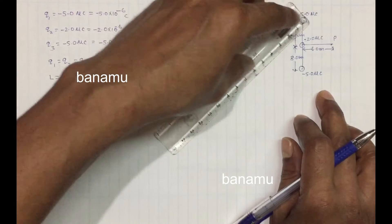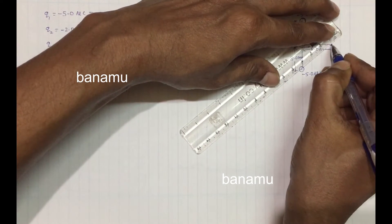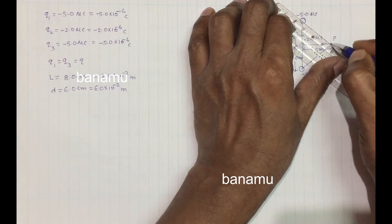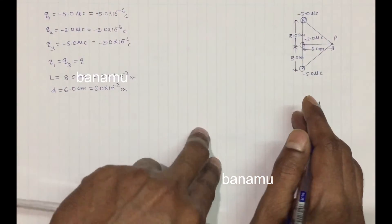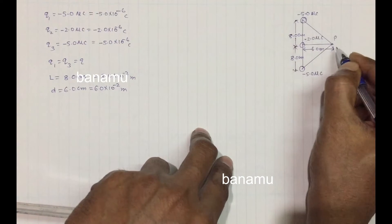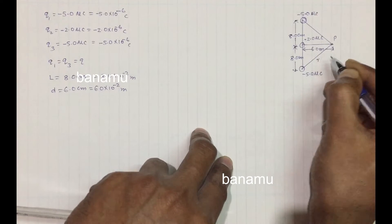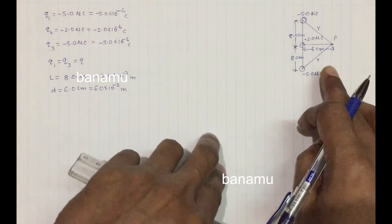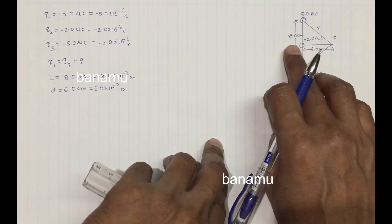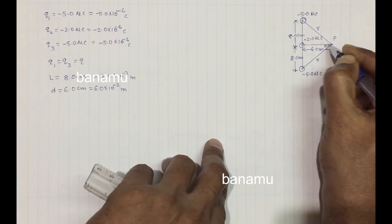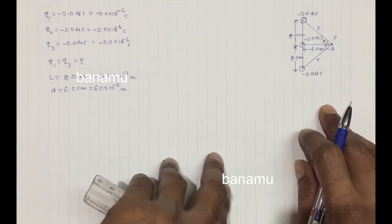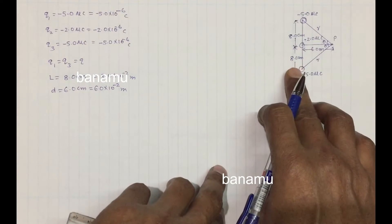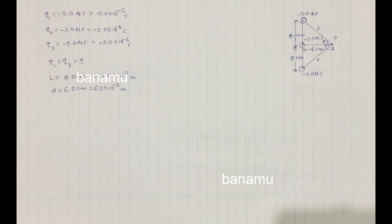Let us draw the force diagram from the three charges at point P. The distance r from either minus 5 microcoulomb charge to point P is r equals the square root of 6 cm squared plus 8 cm squared. Both minus 5 microcoulomb charges are at the same distance from P and make the same angle theta with the horizontal line.